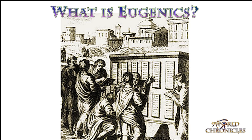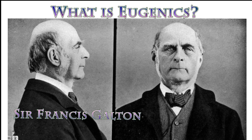Sir Francis Galton, who lived from 1822 to 1911, wrote a theory of hereditary talent and character. He elaborated the idea of controlling human development by judging morals, intelligence, and personality traits that he thought tended to run in certain families. He regarded genius and talent as hereditary traits that could be passed down and controlled.